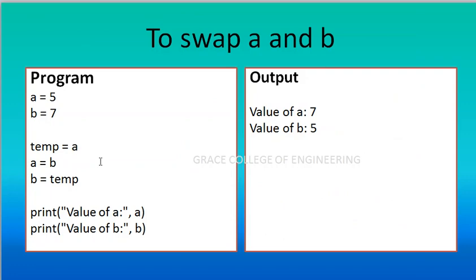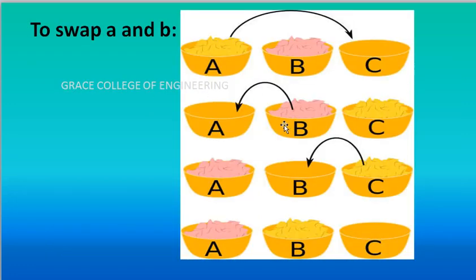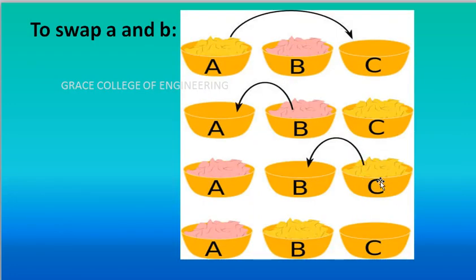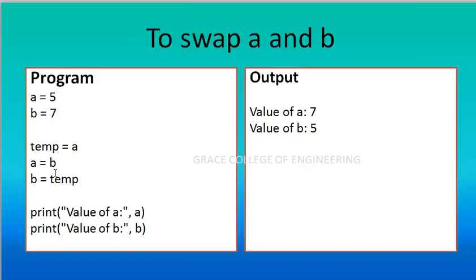The temporary variable name in the concept was C, but in the program I have given 'temp'. You can give any name — C, D, E, or any other name. The variable is used to store values. Step two: B's value, which is 7, is moved to A. Step three: the temporary variable, which holds 5, is moved to B. Finally, the temporary variable will be empty.